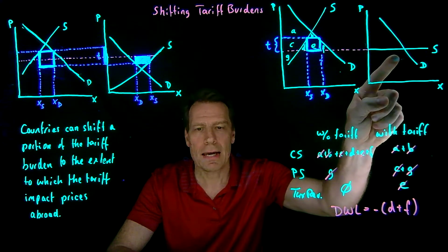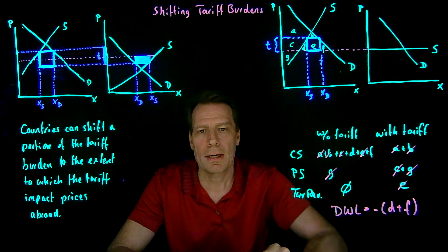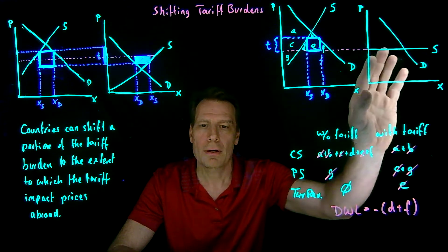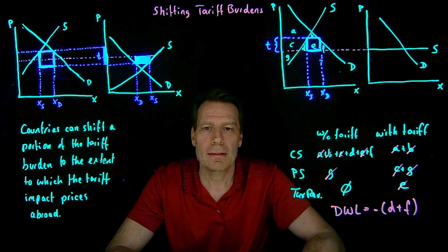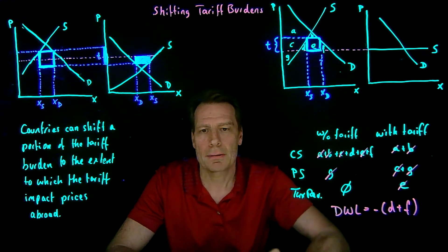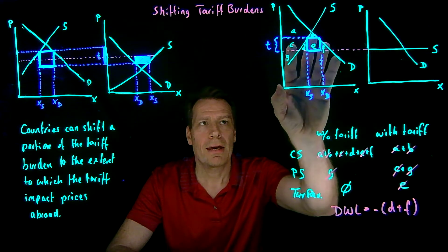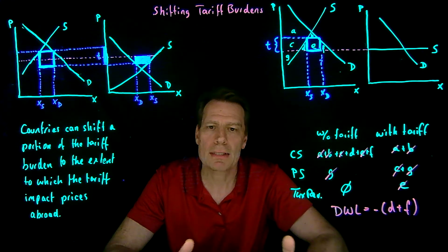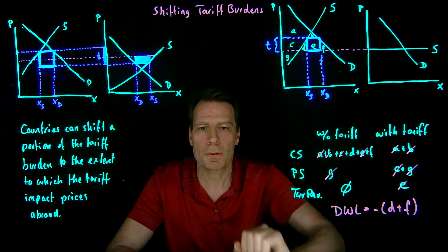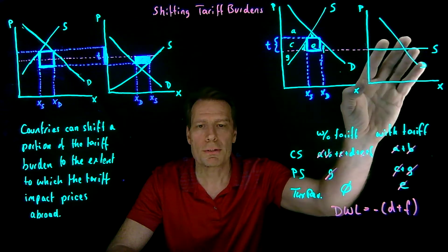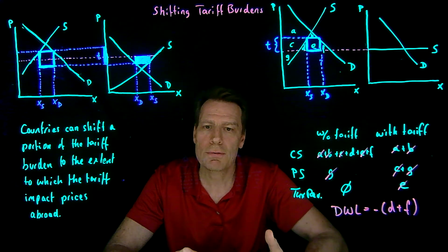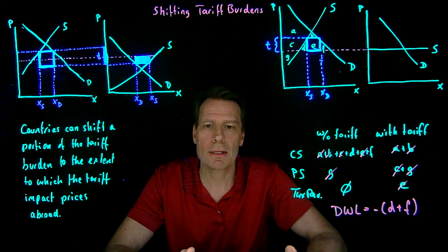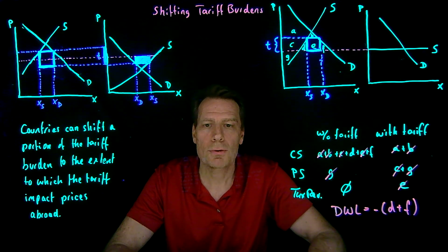The more elastic the supply curve in the exporting country, the less ability the importing country has to shift a portion of the burden to the other country. If a country is small and importing, its ability to affect prices abroad is very limited — this is really the case of the rest of the world being big and this country being small. If a country is a large part of the world economy, it may have some ability to influence prices abroad and shift a portion of the tax burden. But the smaller the country relative to the rest of the world, the less ability it has to shift the tax burden, because the less it can impact prices elsewhere.